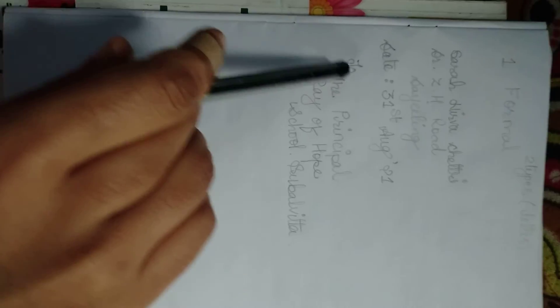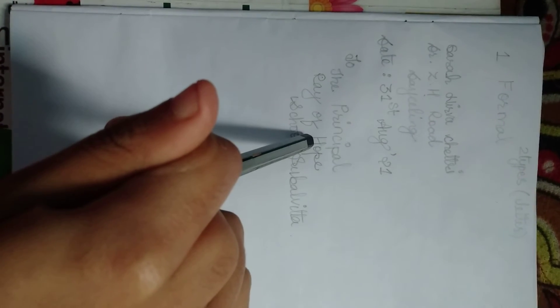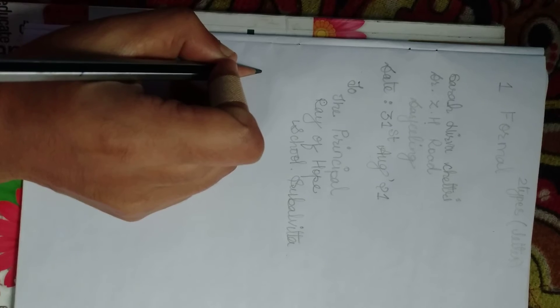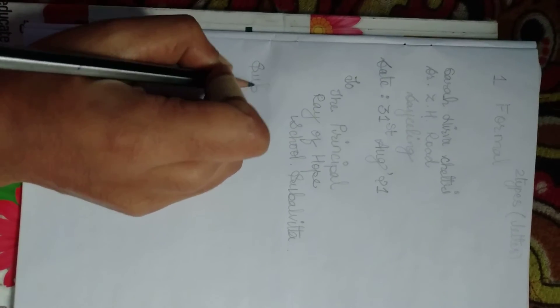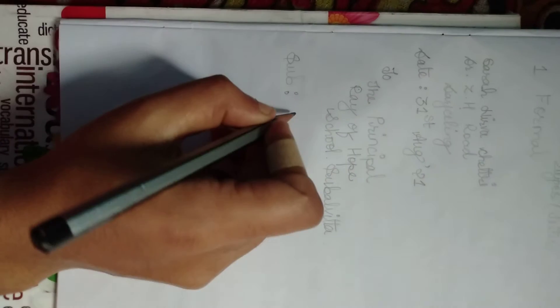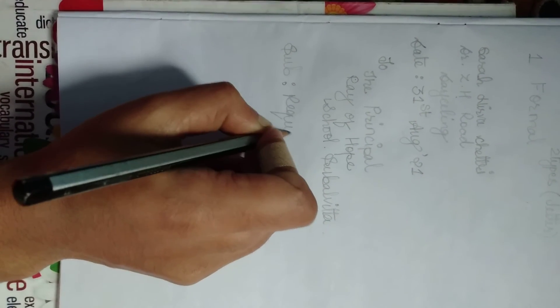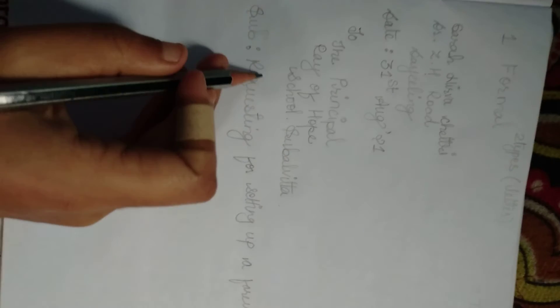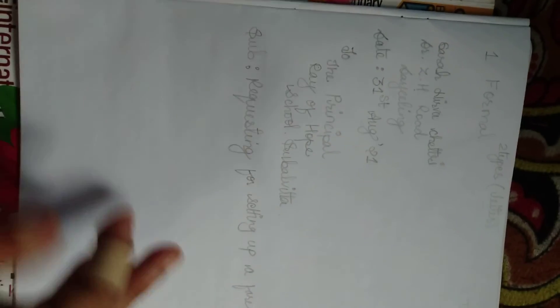After the recipient's address, you have to write the subject. The subject tells what the letter is about — the purpose of writing it. For example: 'Requesting for setting up a farewell party.' You must underline the subject.